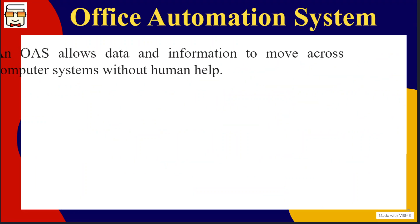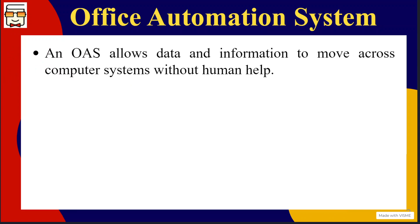So, what is an office automation system or an OAS? An OAS basically allows the movement of data as well as information across different parts of an organization without human help. That means whenever an organization starts to use an office automation system, it tries to automate a particular process and tries to eliminate all kinds of human intervention for that particular process.